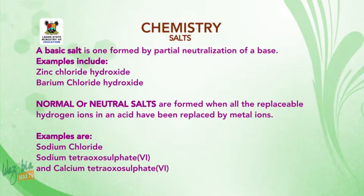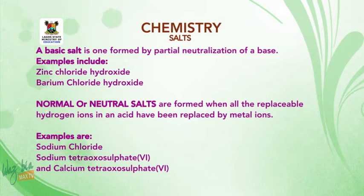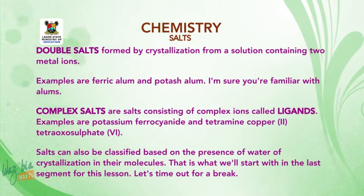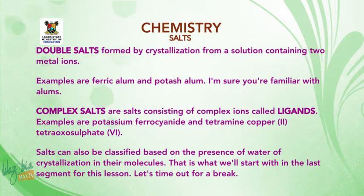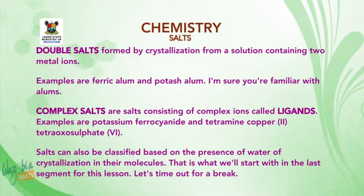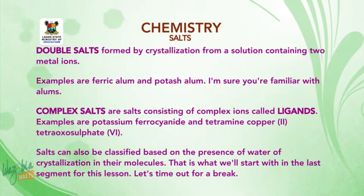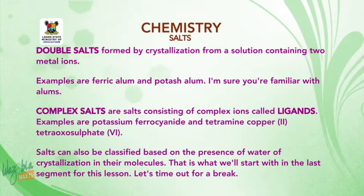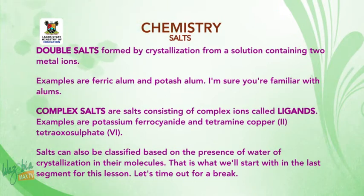Normal or neutral salts are formed when all the replaceable hydrogen ions in an acid have been replaced by metal ions. Examples are sodium chloride, sodium tetraoxyl sulfate 6, and calcium tetraoxyl sulfate 6. Double salts are formed by crystallization from a solution containing two metal ions; examples are ferric alum and potash alum. Complex salts consist of complex ions called ligands; examples are potassium ferrocyanide and tetramine copper 2 tetraoxyl sulfate 6.